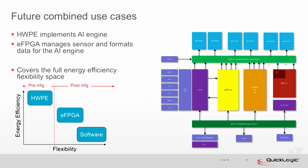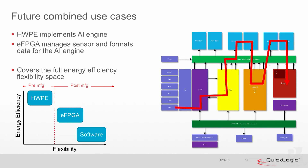We'll use this test chip to evaluate it, initially using the RISC-V CPU itself as the processing engine. But I see the future lying with hardware processing elements alongside the RISC-V CPU and the EFPGA — the EFPGA taking data from a sensor, pre-processing it, pushing it into a hardware processing engine like a CNN engine, and then when meaningful events come out, passing them over to the RISC-V CPU to act on those events.